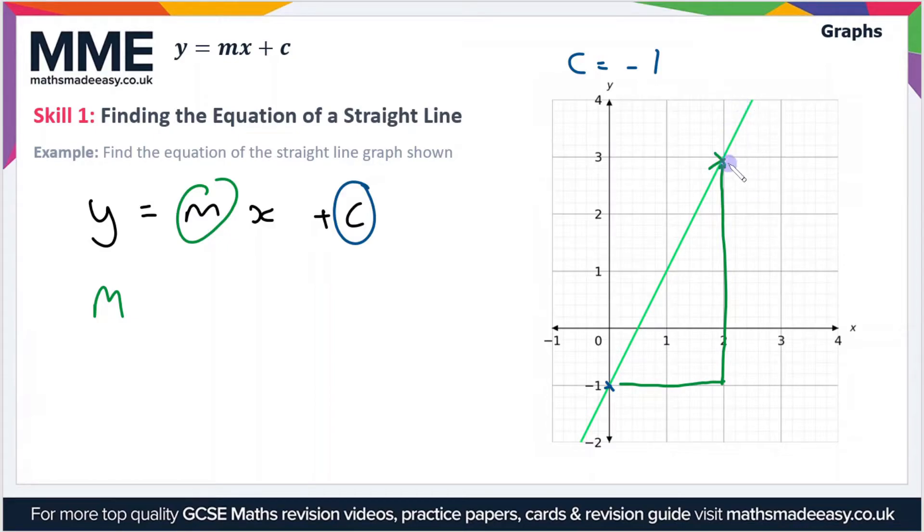So the change in y value is three minus minus one which equals four and the change in x value is two minus zero or two. So the gradient is therefore four divided by two which equals two.